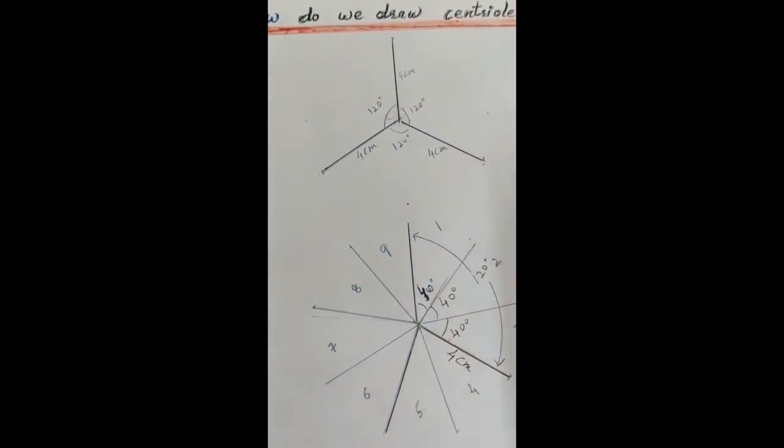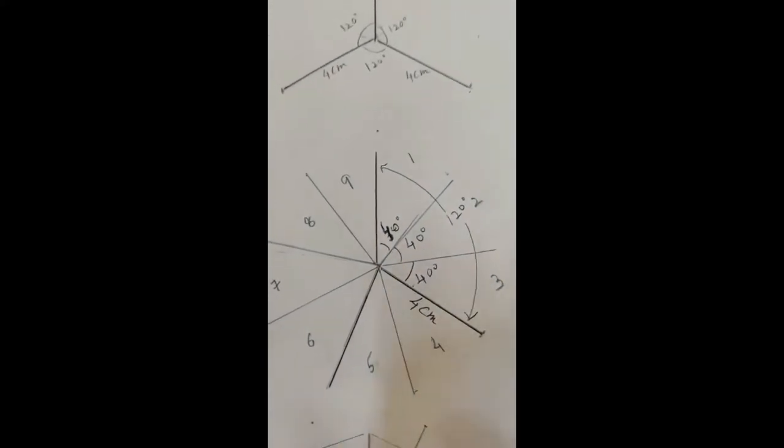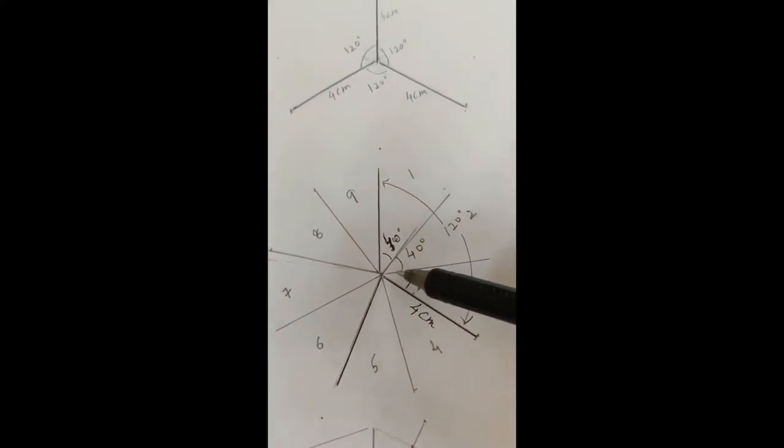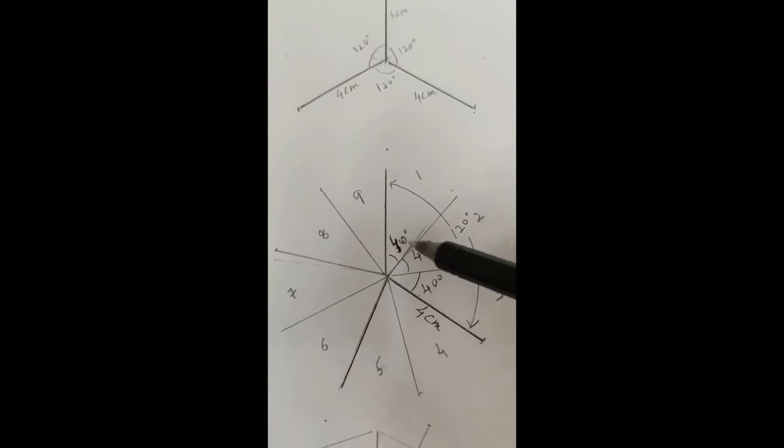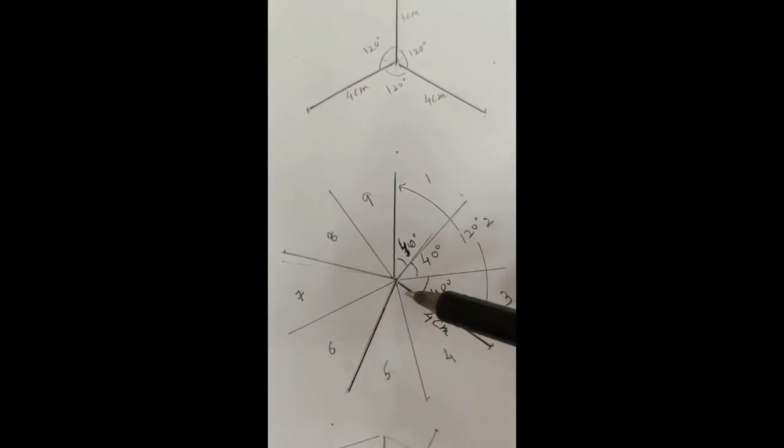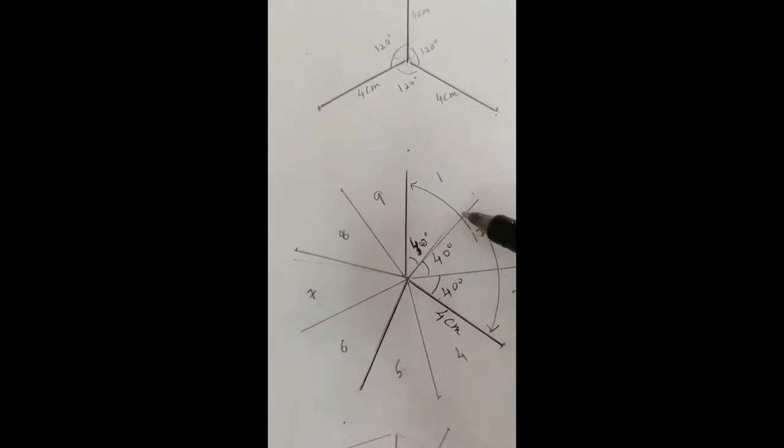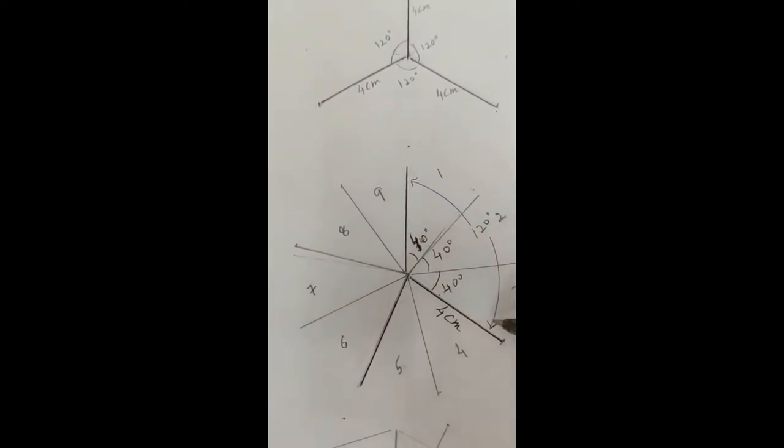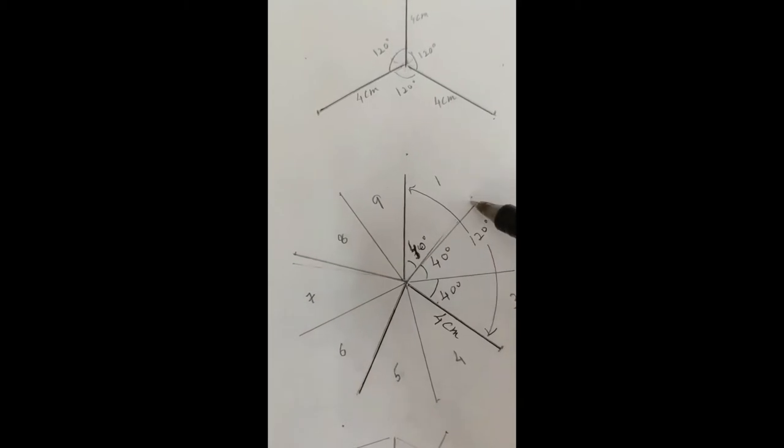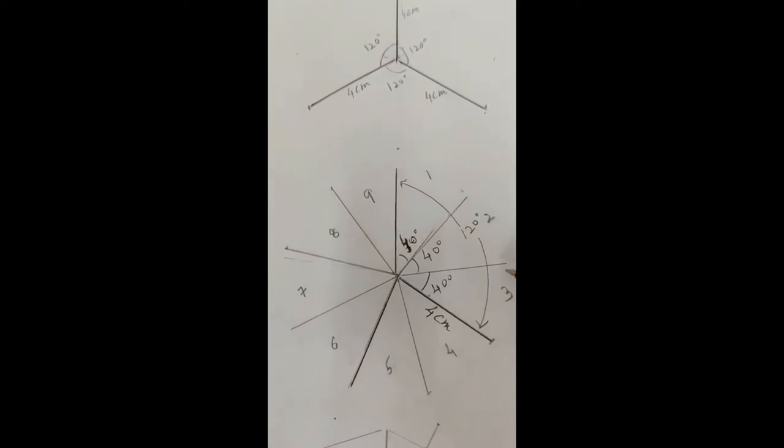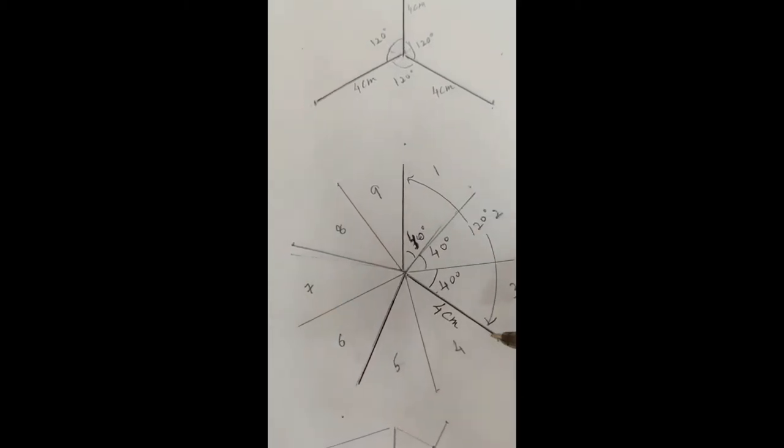Now next step: these 120 degree angles are to be further divided into 40, 40 angle each. So 120 divided into 40 degrees, 40 degrees, and 40 degrees. Every time the line should be of the same dimension, that is 4 centimeter.